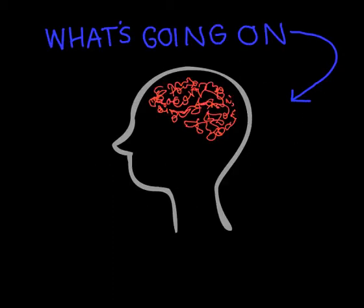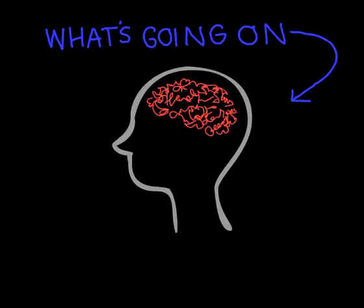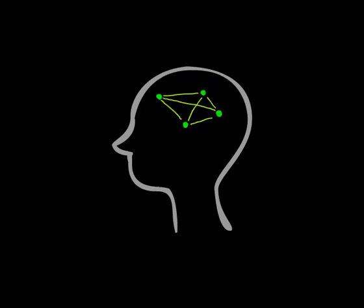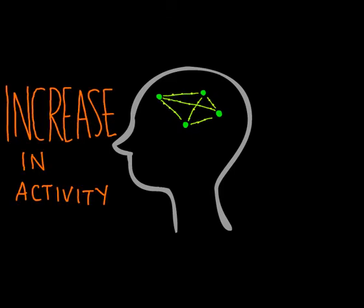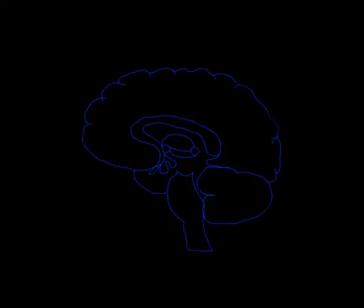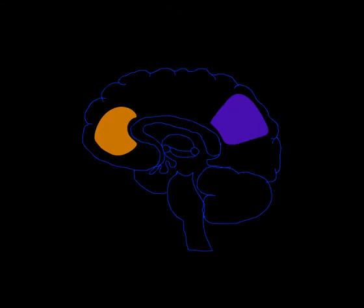What's going on inside your head when your mind wanders? While it may feel like flipping on a screensaver, our brain is still very much at work. In fact, a particular group of brain regions actually increase in activity whenever we aren't focused on a task. This is known as the default mode network, and the functional connections typically include the medial prefrontal cortex, medial parietal cortex, and medial temporal lobes.